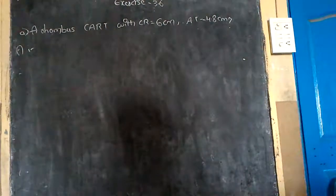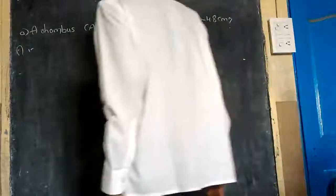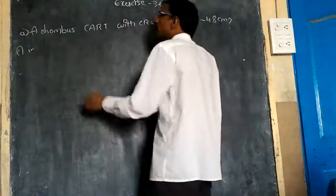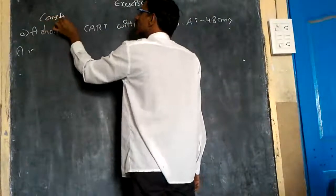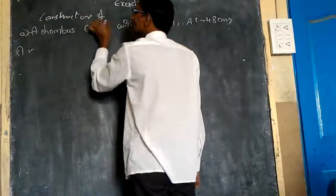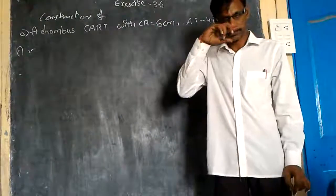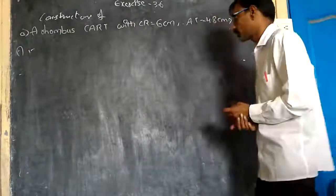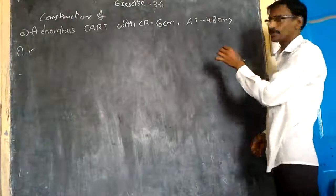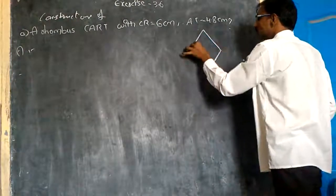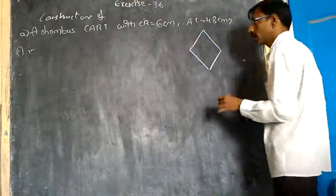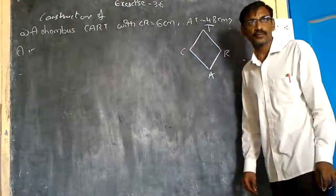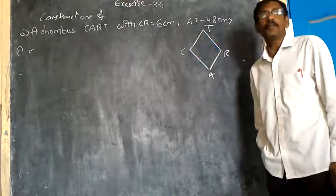Look at the board everybody. Here is the construction of Rhombus — keep in mind. The Rhombus is named C-A-R-T. Every day, we try to construct the Rhombus. This is my Rhombus. The name is C-A-R-T. So everybody knows, I think so.